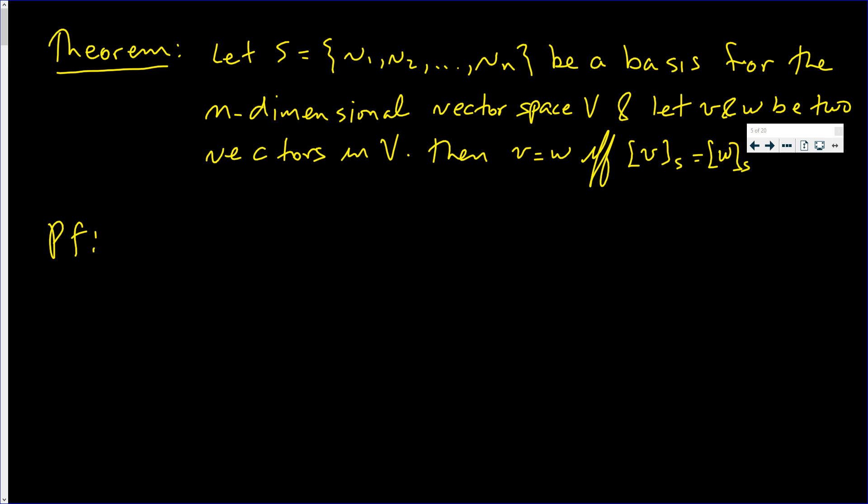In this video we have a vector, we have a set, we have a basis for the n-dimensional vector space V, and little v and w are two vectors in V.